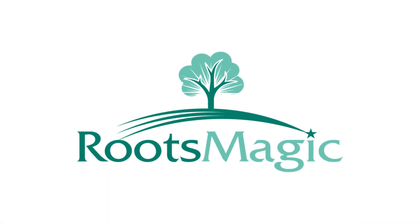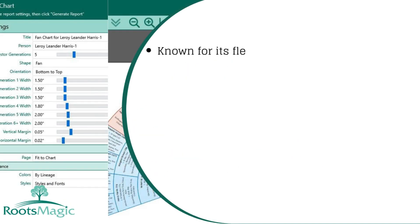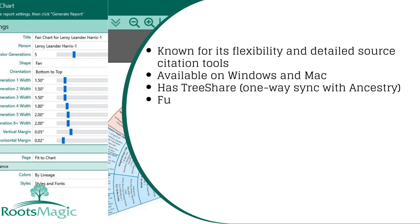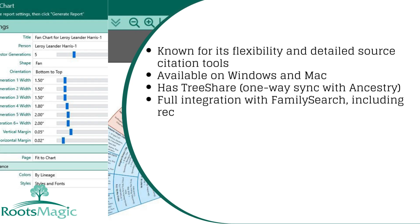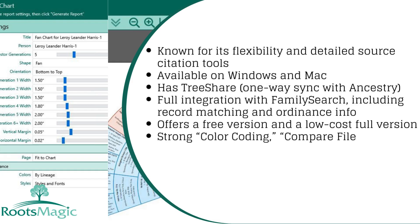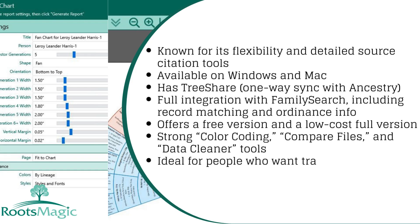Roots Magic 9 is known for its flexibility and detailed source citation tools, available on Windows and Mac. It offers TreeShare one-way sync with Ancestry and full integration with FamilySearch, including record matching and ordinance info. It has a free version and a low-cost full version, with strong color coding, compare files, and data cleaner tools — ideal for people who want transparency and granular control of their data.